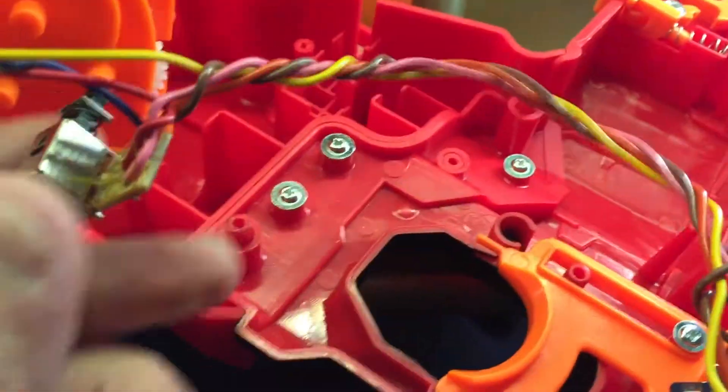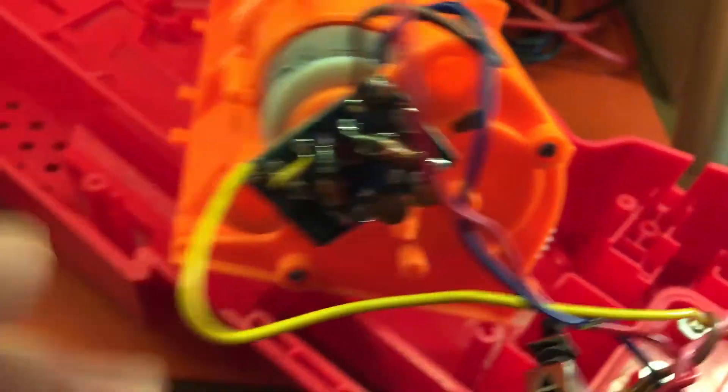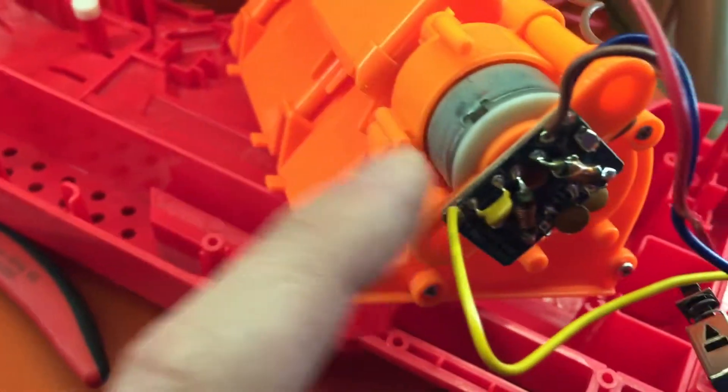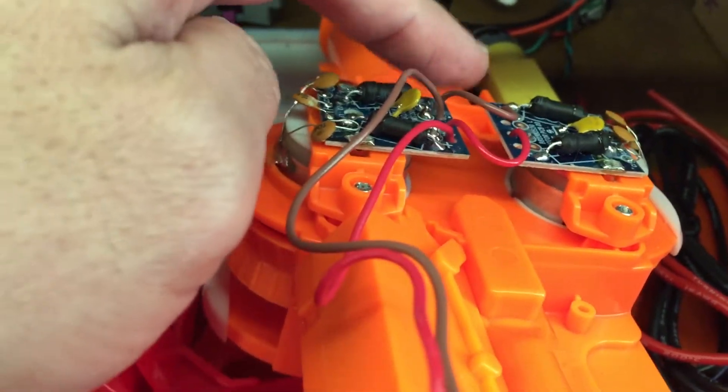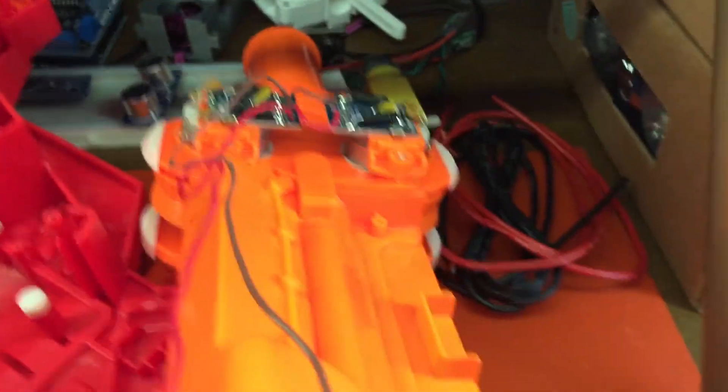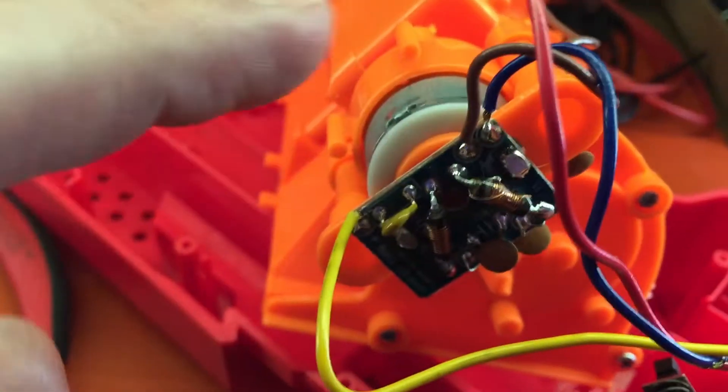The yellow, which is still on the positive end, bypasses here and goes straight to the positive on the pusher motor. Going to the negatives we have the cathode end.